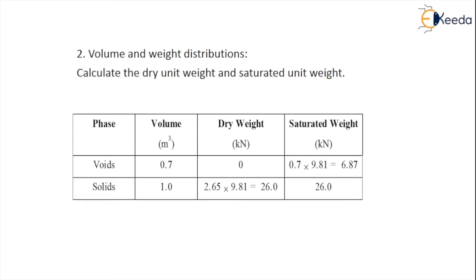From the weight volume distribution we have to calculate dry unit weight and saturated unit weight. These are the data given in the problem. They gave the volume of voids as 0.7, solids as 1.0, total volume is 1.7. Dry weight of voids is 0, solids dry weight is given as 26 kilonewtons. Saturated weight of the voids is given by 6.87, saturated weight of the solids is 26.